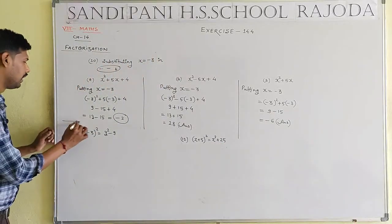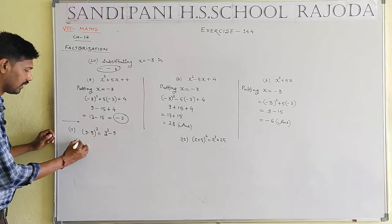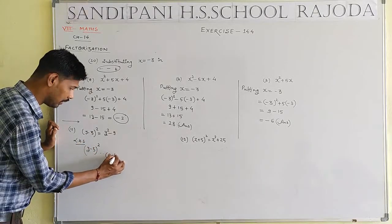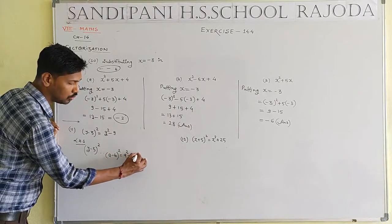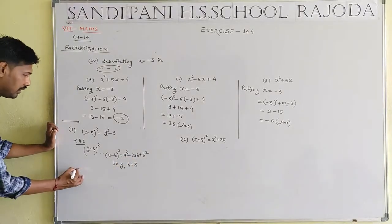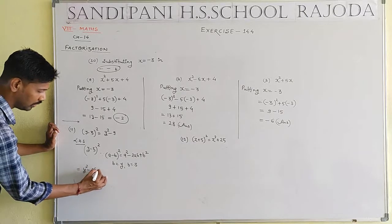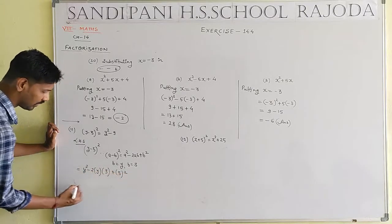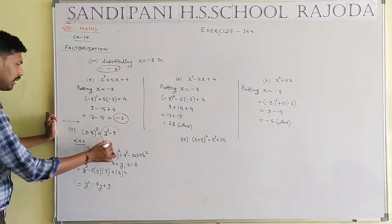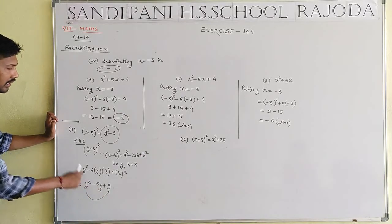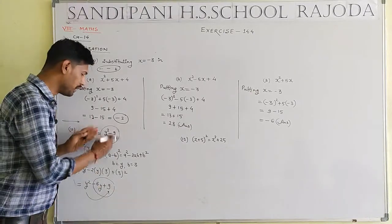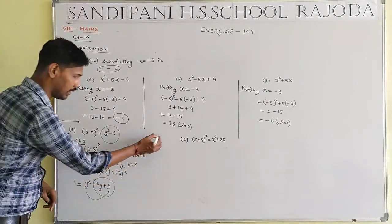Question number 11: (y minus 3) whole square. Taking LHS, we apply the identity (A minus B) whole square equals A square minus 2AB plus B square, where A equals y and B equals 3. This gives y square minus 2 times y times 3 plus 3 square, which equals y square minus 6y plus 9. But RHS is given as y square minus 9. The error is that the minus 6y term is missing.